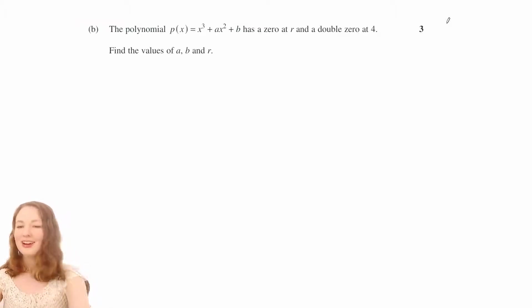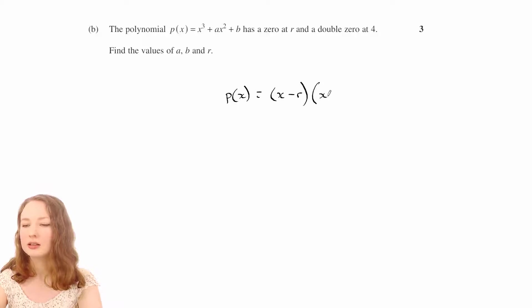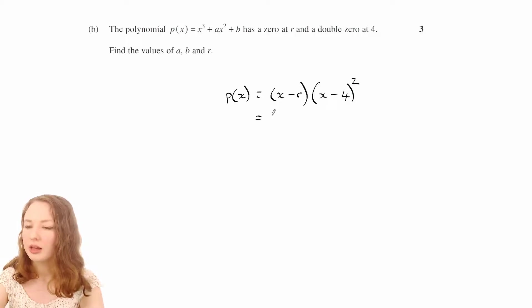Part B. All right, if it has a zero at r and a double zero at 4, that means that p of x can be written as x minus r, that gives us the zero r, and times x minus 4 squared, that gives us the double zero. So let's just expand that and see what that makes.